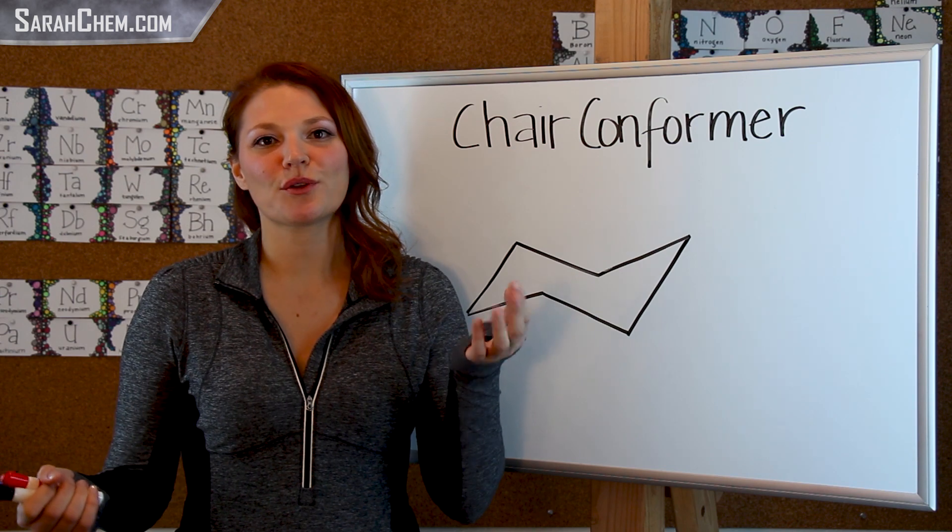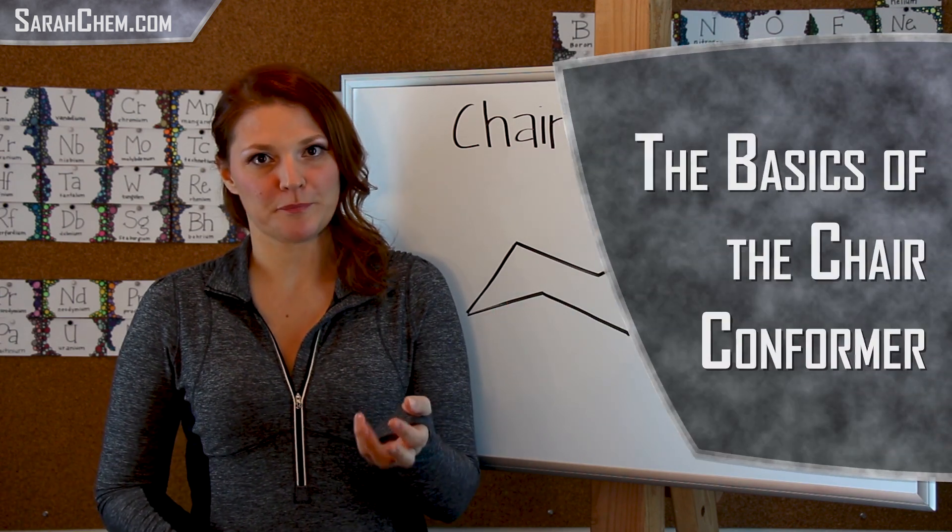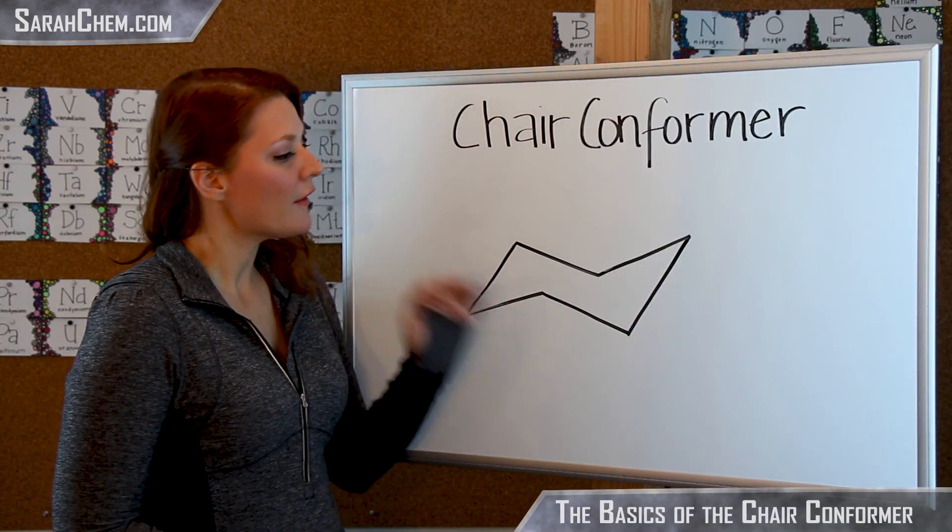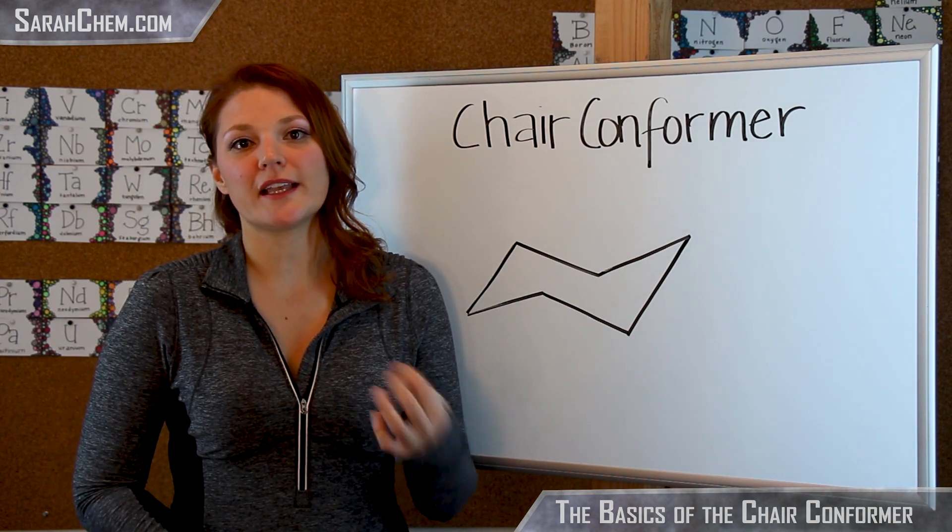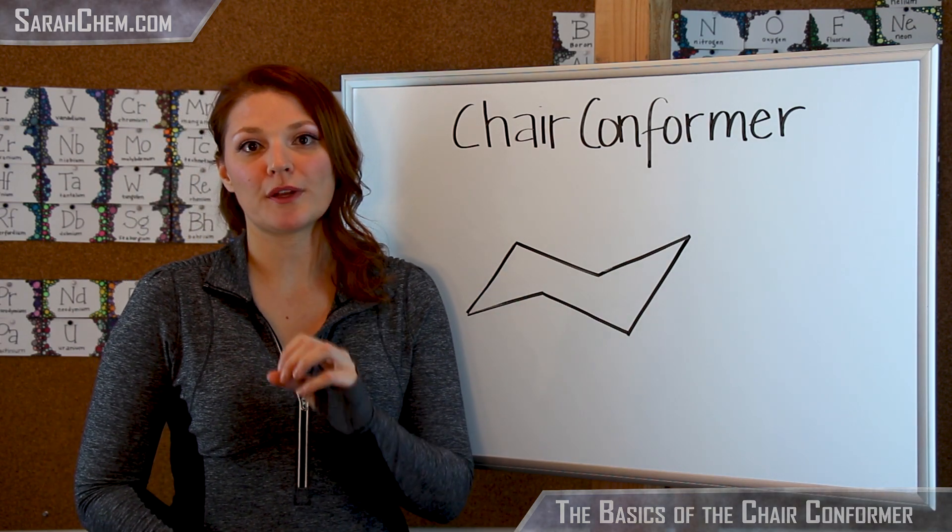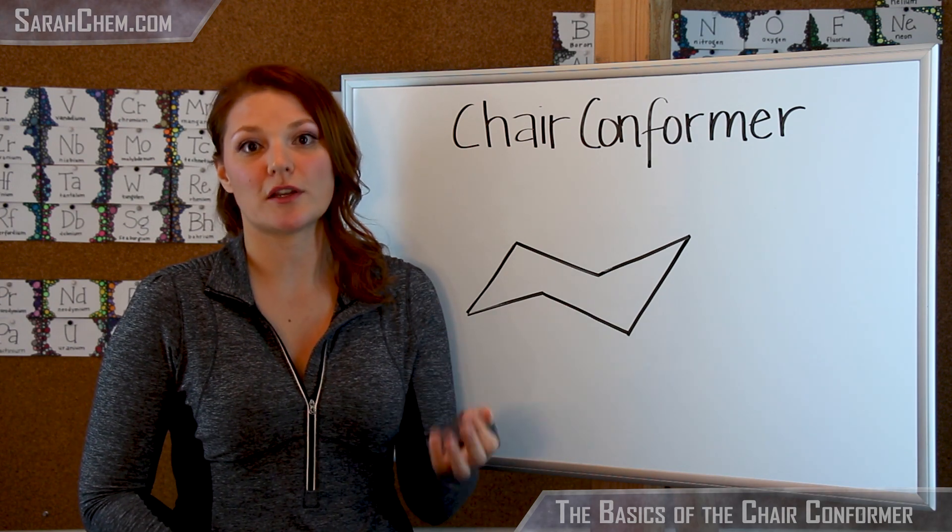Hi everyone! In this video tutorial I'd like to take a look at the chair conformer. So if we take a look at the board over here, this is an image of a chair conformer. Remember that this is a conformer of cyclohexane, a six-membered carbon ring in which all of the carbons are singly bonded to one another.